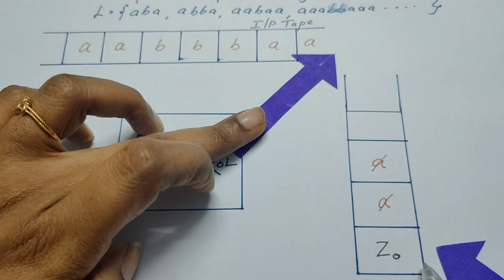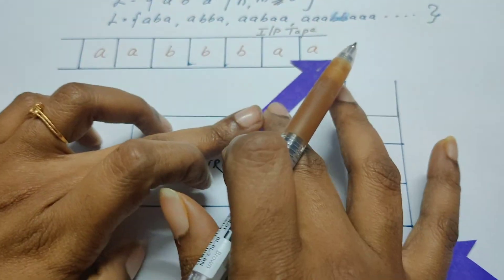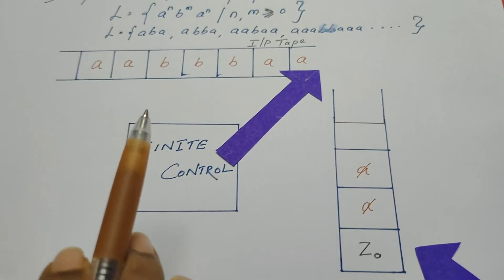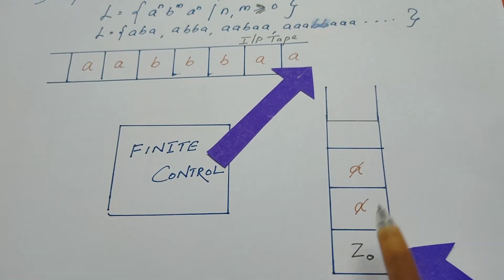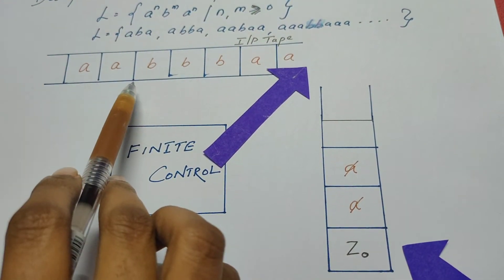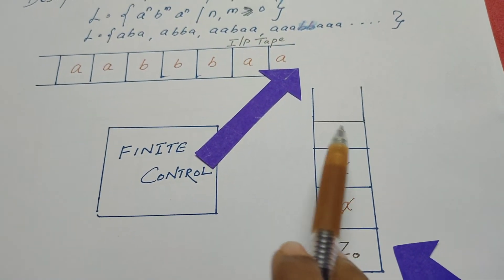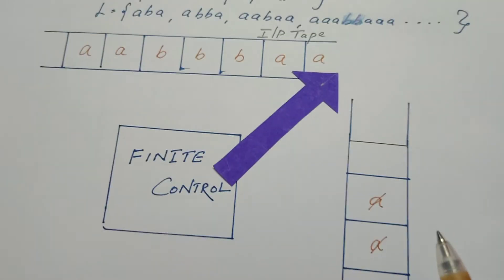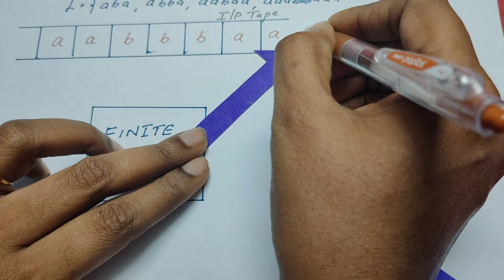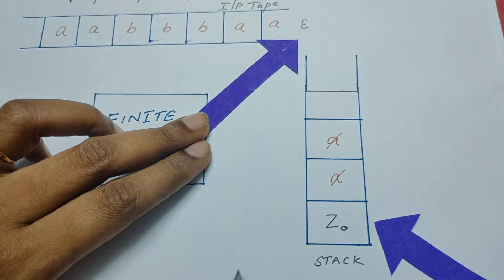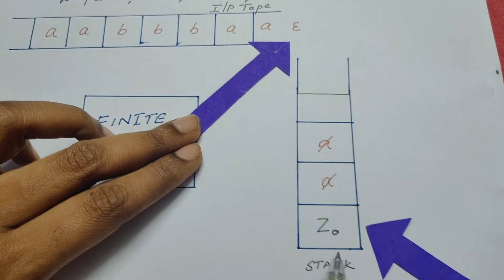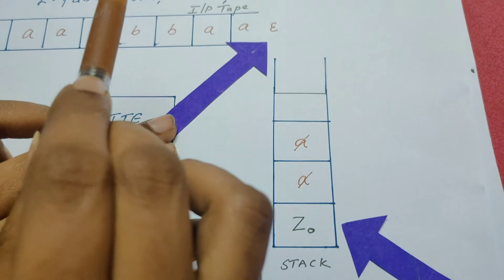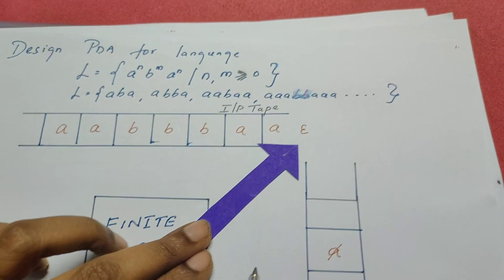When it reaches the end of the string, we expect the stack to be empty. This is the logic of the PDA — when it reads a's, push symbols onto the stack; when it reads b's, there is no operation on the stack; when it reads the second set of a's, every symbol already pushed onto the stack needs to be popped. When it reads epsilon at the end, the stack must be empty. Only then can we say the string belongs to the language, or that the PDA recognizes the string.